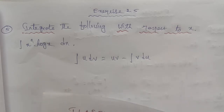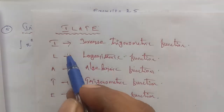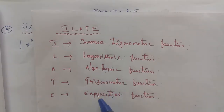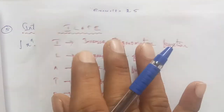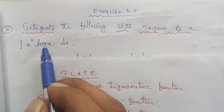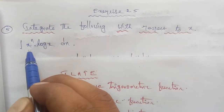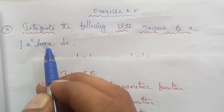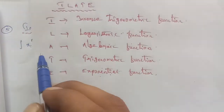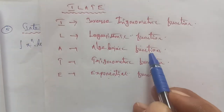So we need to identify the u and dv terms. In the given question, x power of n and log x are present. The first term is x power of n, which is an algebraic function. Algebraic function is done — x, y, z, numbers are all algebraic functions.